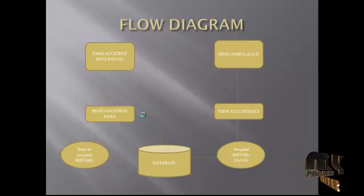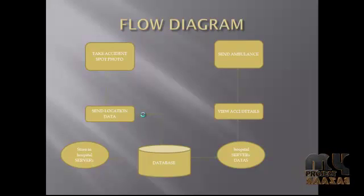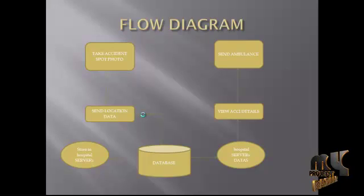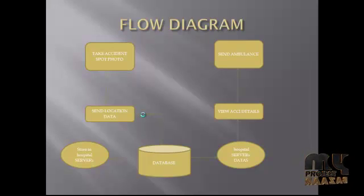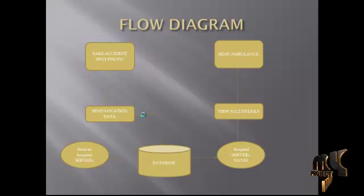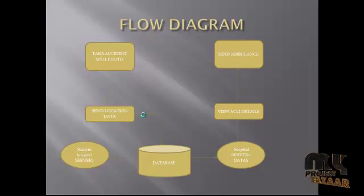Let's see the data flow diagram of this project. The first two modules take the accident spot photo. Next, we get the location from the GPS server. After that, we collect the location data and accident images, and finally send them to the database. The hospital services are stored in the server database, and that data is used to view the accident details. Finally, the ambulance is sent to the correct location according to where the accident occurred.